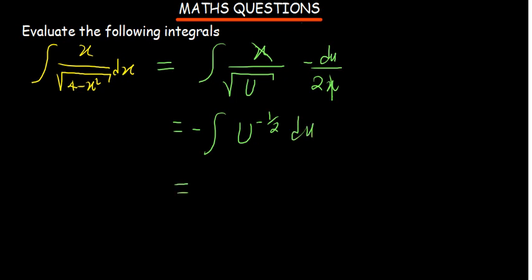So this is going to be negative. Now the integral of u to the power negative half, add a 1, that will become u to the power half. The same half, bring it in the denominator. Then plus a constant c.